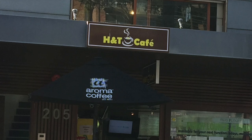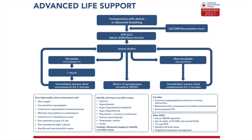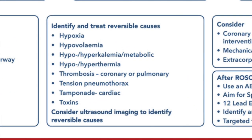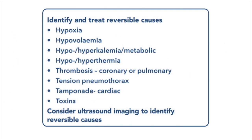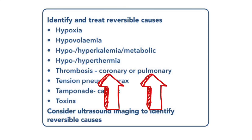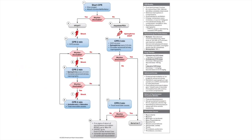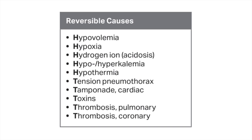One way to generate a list of possible reversible causes is to go through the H's and T's. The 4 H's and 4 T's of the European Resuscitation Council are shown right here. You can see they've grouped acute myocardial infarction and pulmonary embolism under the same T — thrombosis. The AHA guidelines separate them so that they have 5 not 4 T's. To balance the books, they've added in another H — hydrogen ions — suggesting acidosis is a cause of cardiac arrest.